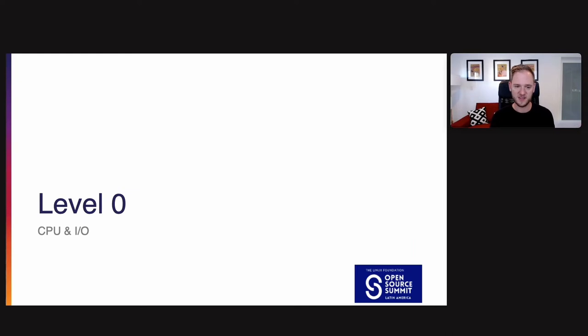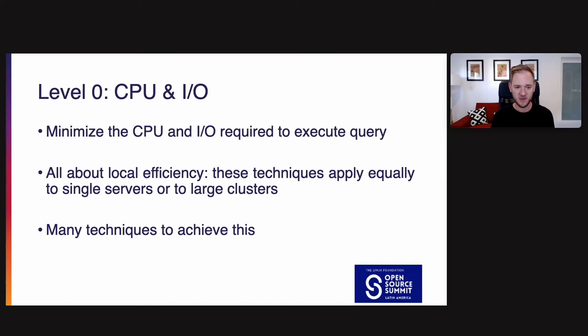The first one, level zero, the most innermost level CPU and IO. So the goal here is to minimize the CPU and IO required to execute a query. This is all about local efficiency. These techniques apply equally to single servers or large clusters. The idea is if you had one server, you want to do as much as you can on that one server, be as efficient as possible. And if you have a thousand servers, the way to get good performance at that thousand server scale is to make sure each individual server is running as efficiently as possible. There's many techniques to achieve this and I'll discuss some of them.